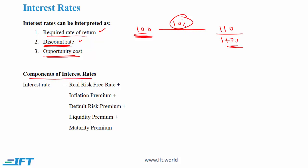Components of interest rates. Interest rates can be thought of as a sum of these components: the real risk-free rate, the inflation premium — where the inflation premium is the expected inflation — then we have a default risk premium, which is a premium that we add because of the risk of default. Liquidity premium is a premium we add if the security cannot be sold very easily, and then maturity premium is a premium based on the maturity of a security.